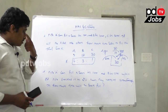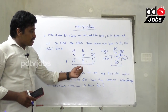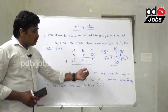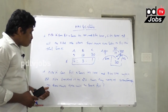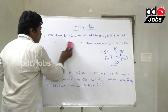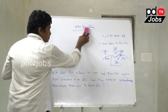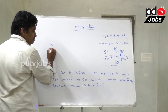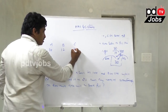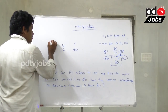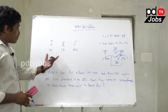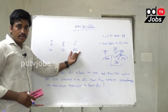Next question: Pipe A can fill a tank in 10 hours and pipe B in 12 hours, while the third pipe C empties it in 20 hours. If they all work simultaneously, how much time will the tank take to fill? Two pipes fill the tank and one pipe empties it.